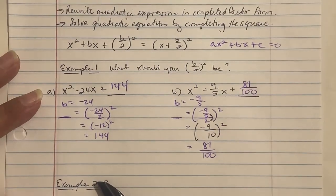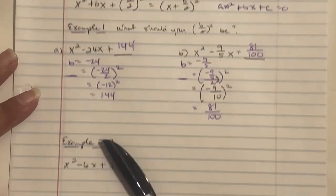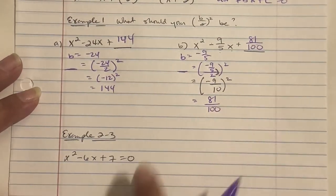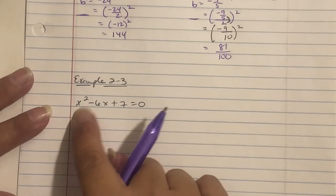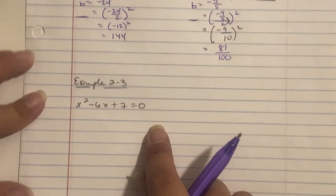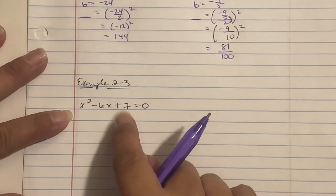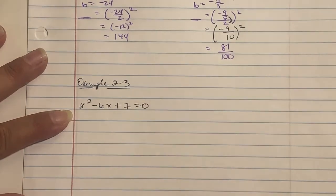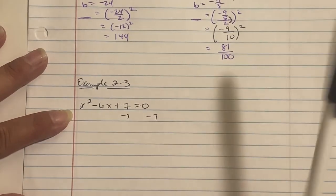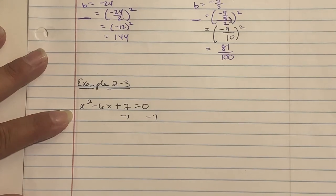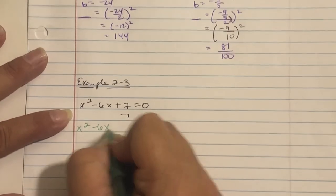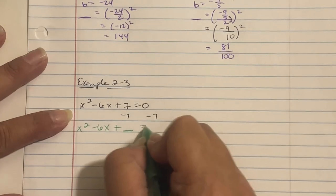Now we're going to apply what we just did to the next example. It says x squared minus 6x plus 7 equals 0. First thing, in order to do completing the square, you need to move the 7. So we subtract the 7 over: x squared minus 6x plus a blank equals negative 7, and I'm going to put a blank on the other side.